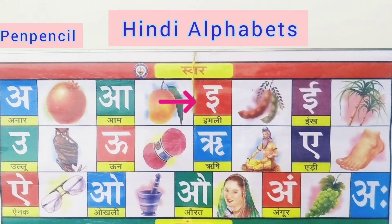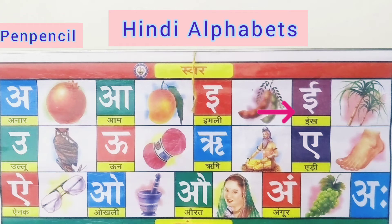E say emalee — tamarind. E say emalee — tamarind. Ee say eek — sugar cane. Ee say eek — sugar cane.